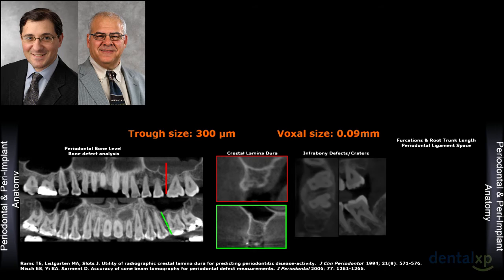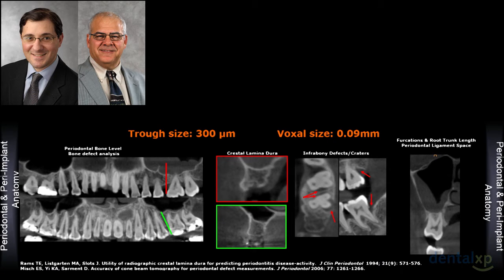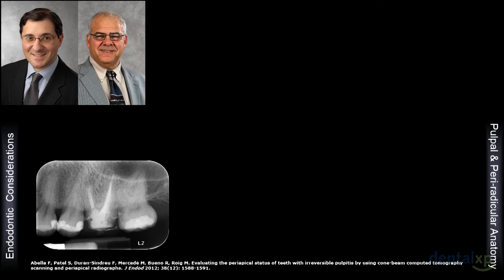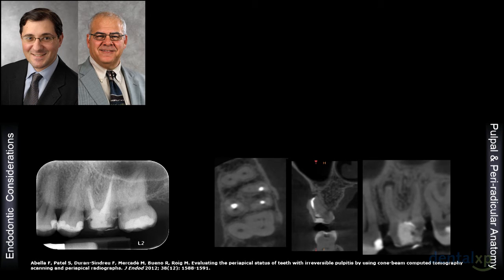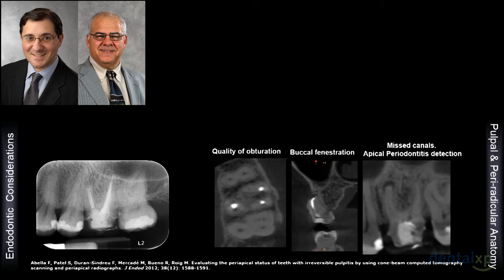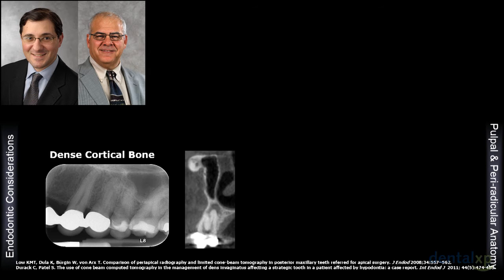With a trough size of 300 microns and 0.09 voxel size, we can appreciate intra-bony defects and craters, sinus pathology, furcations, root trunk anatomy, periodontal ligament space, and even calculus at the distal of tooth number 18 — all these intimate details can be assessed quite predictably. Cases before crown lengthening are often evaluated or managed endodontically, but MB2 is oftentimes missed. This cross-sectional imaging shows that canal was missed on the mesial buccal root of tooth number 14, and this patient remained with pain. Two-dimensional x-rays sometimes do not tell the full story, and further imaging is required.